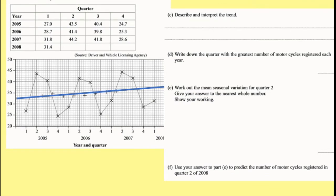So I made it a bit bigger. I've drawn my trend line. Write down the quarter with the greatest number of motorcycles registered each year. Now I'm actually going to use my table for that. So if I look at year one, it's actually my greatest one is going to be 2. If I look at year two, it's going to be 2 again. Year three, it's going to be quarter 2. So the answer is just quarter 2.